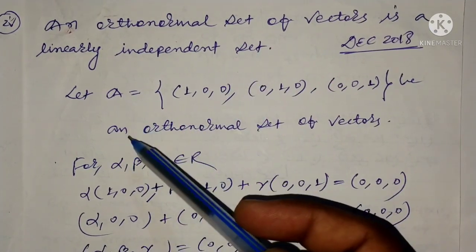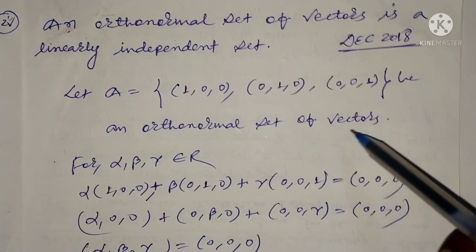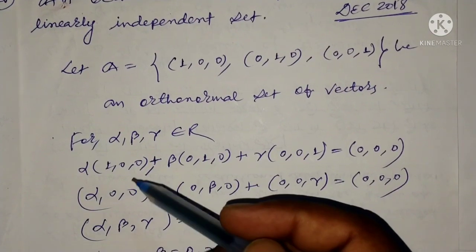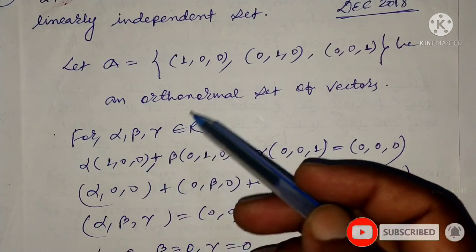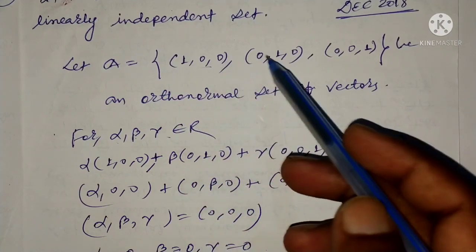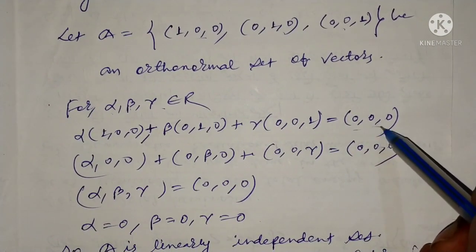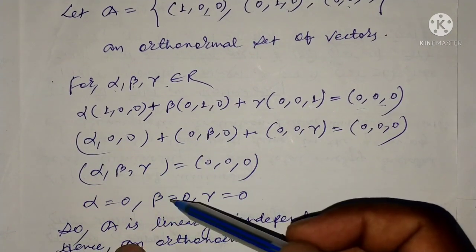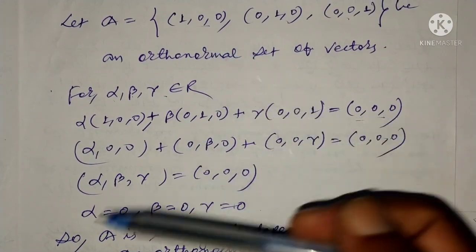Now we take an orthonormal set. Let A be an orthonormal set of vectors with elements (1,0,0), (0,1,0), and (0,0,1). We will show that this is linearly independent. We take three real scalars α, β, γ and check the relation α(1,0,0) + β(0,1,0) + γ(0,0,1) = (0,0,0).